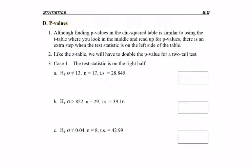Now let's talk about p-values for hypothesis tests about standard deviations. Although you're going to be using the chi-squared table, which has similarities to the t-table—meaning you're looking in the middle of the table for your test statistic and reading straight up for those p-values—there is an extra step if our test statistic is on the left side of the table. We'll be seeing that in one of the upcoming cases.